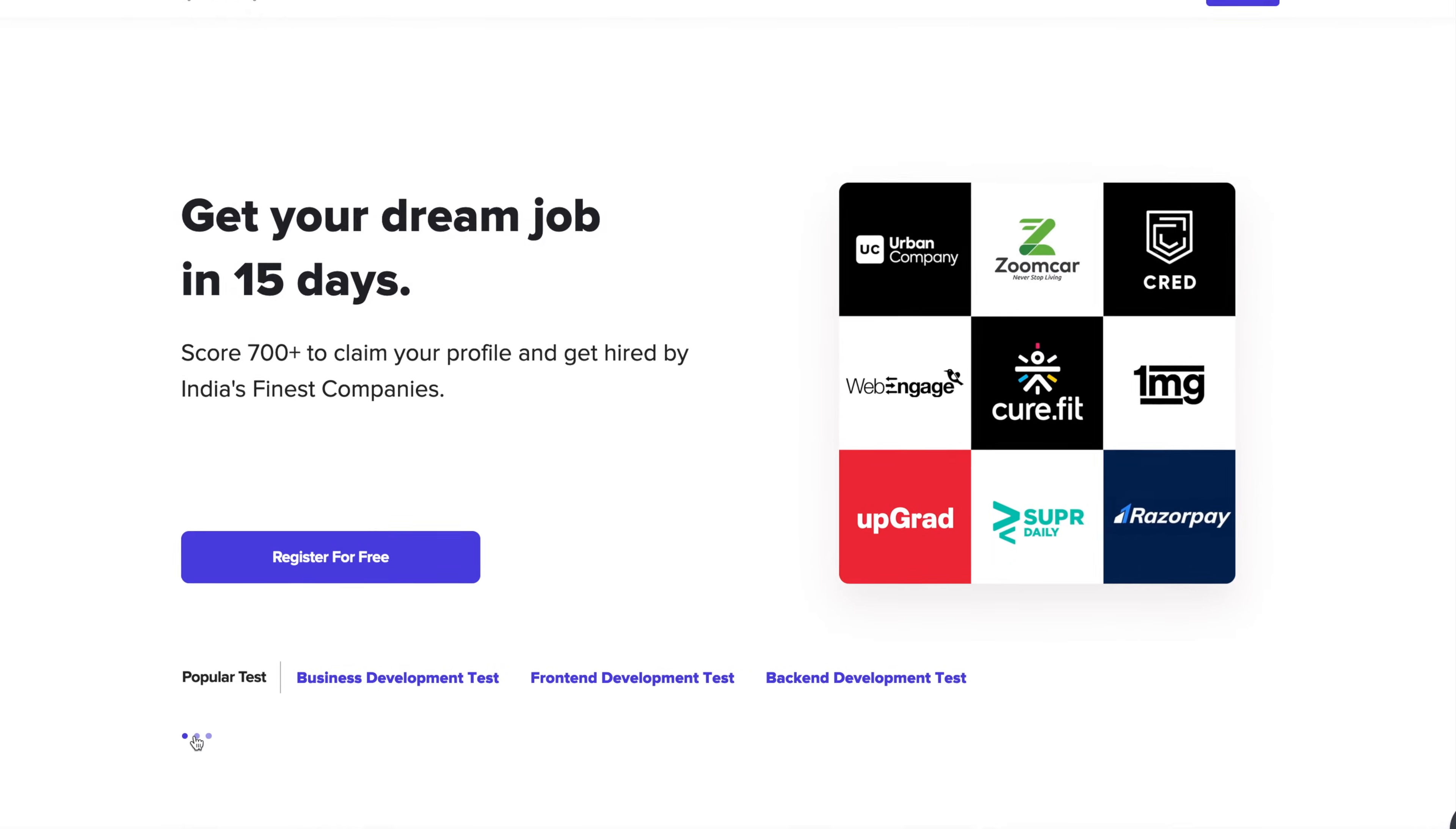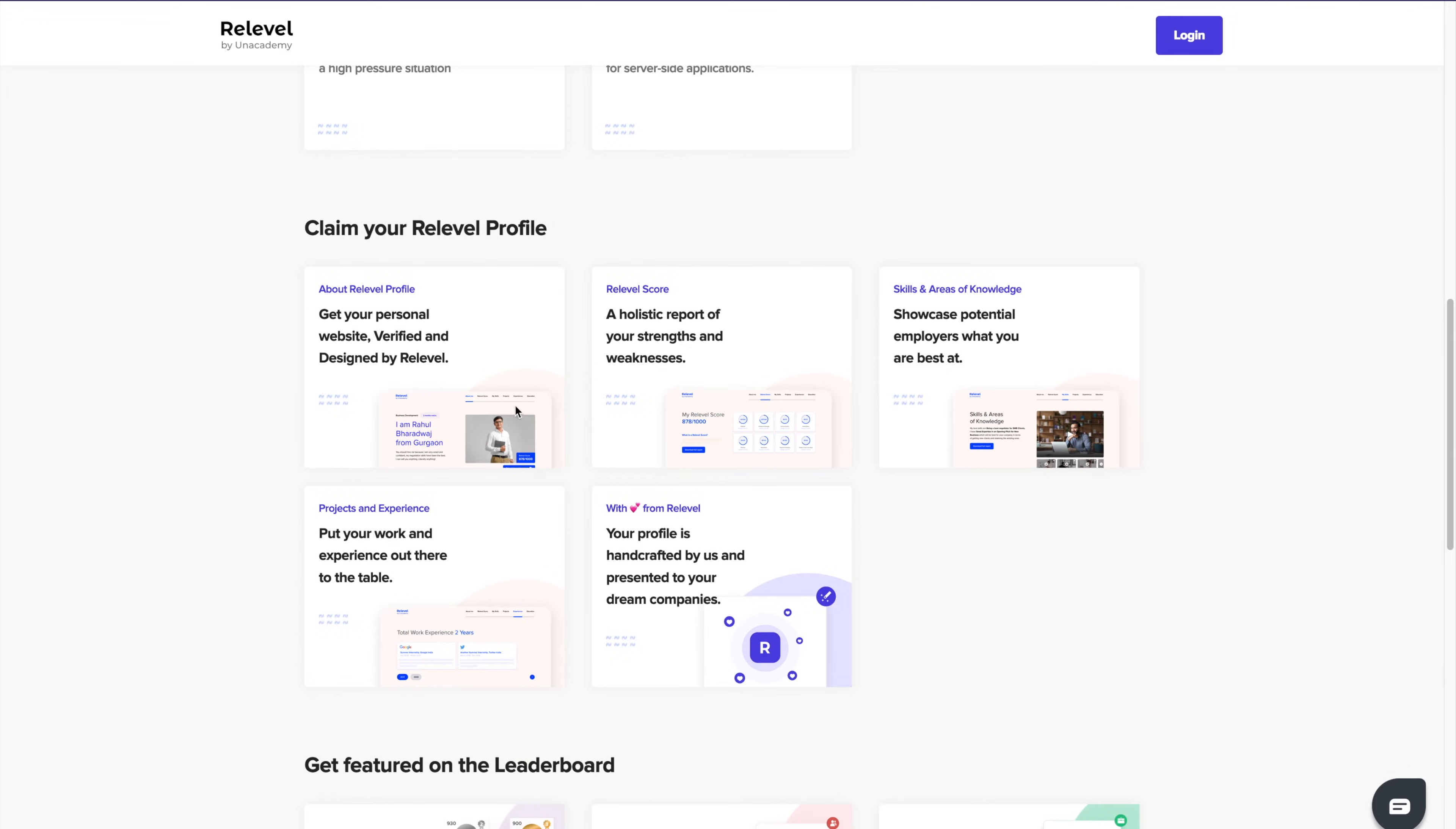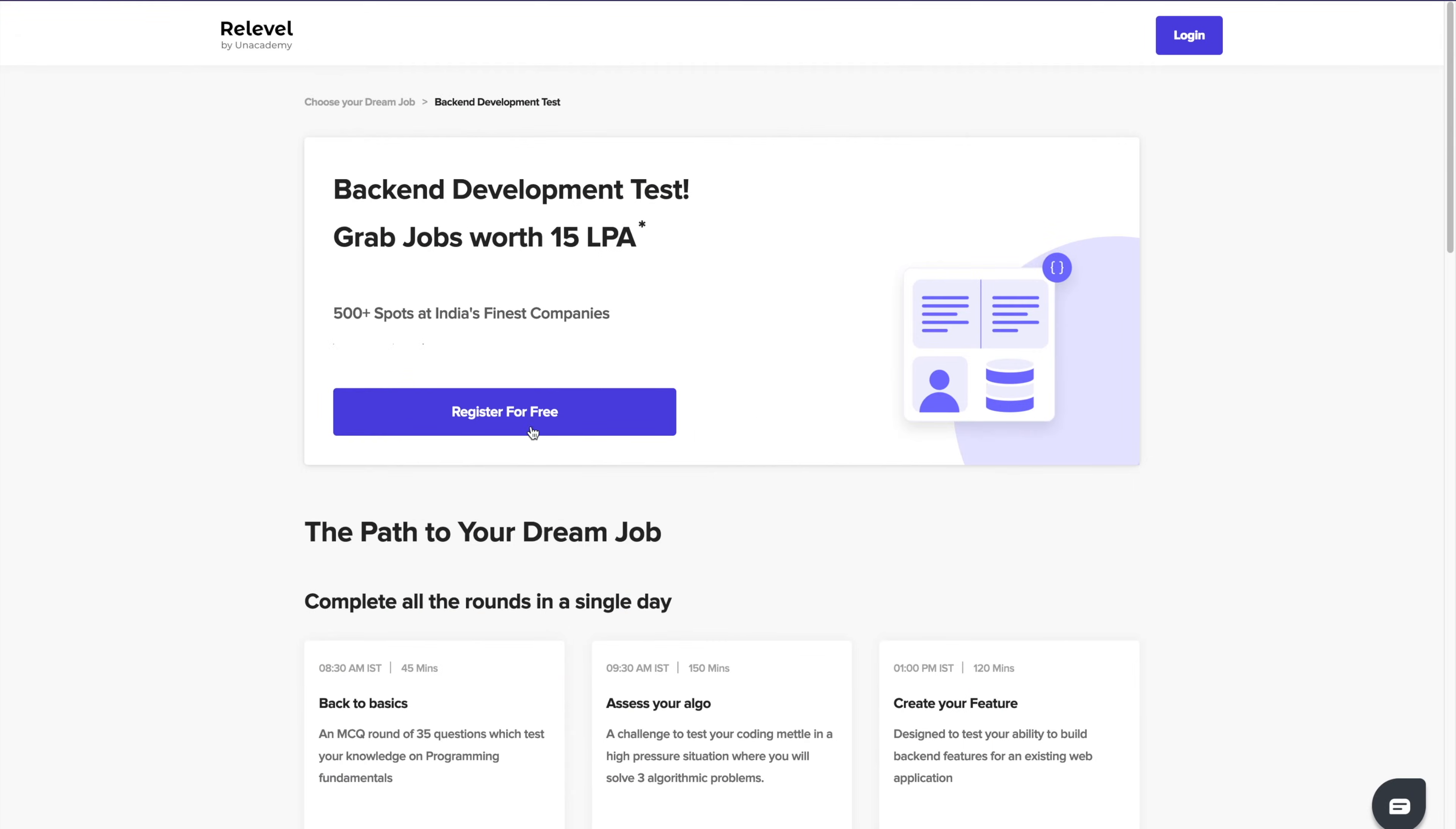Before starting the video, I would love to thank Reliable for sponsoring this entire pre-series. If you're tired of waiting for companies to respond to your applications through different job portals, the next few seconds are very important for you. Reliable by an Academy is India's first hiring platform that can get you a job within a week itself. All you have to do is register for the Reliable test and within a week your interview will be scheduled with India's top companies and top budding unicorns. Check out the links in the description and apply for the Reliable test because it is free.